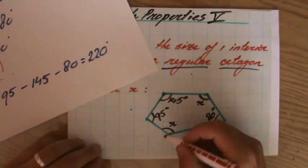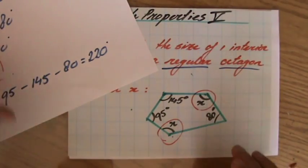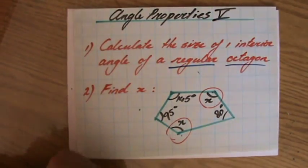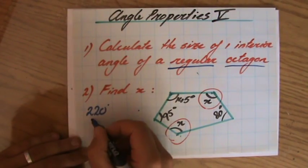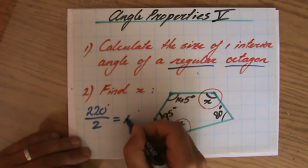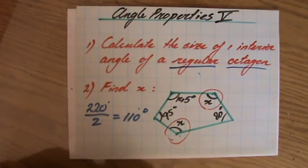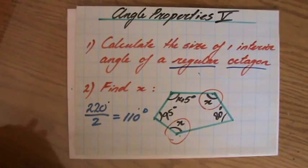Now, considering they are equal in size because it's both the letter x, then I can say, well, if I still have 220 degrees and I have to divide that equally over two angles, then each angle is going to be 110 degrees. Now, that's an obtuse angle. Fantastic.